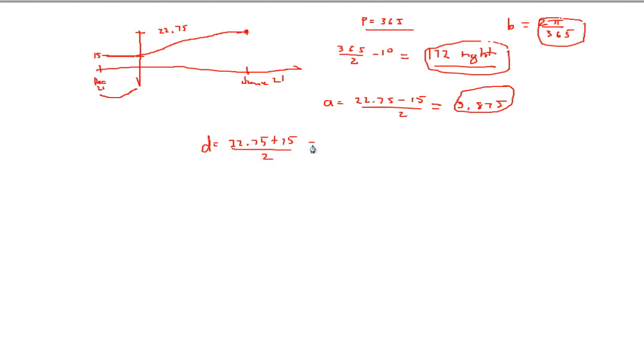So when we substitute into our cosine equation, y will be equal to our a, which was 3.875, times cos of the B value, which is 2π over 365, and our horizontal translation is 172 units or days to the right, so which will be (x - 172), and our vertical translation is 18.875 units up, so it'll be plus 18.875. And that's our equation for our sunset.